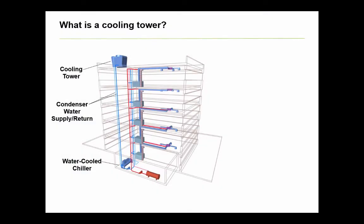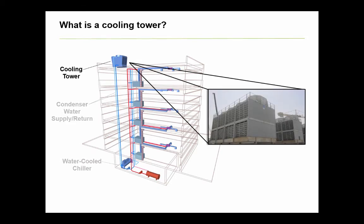So what is a cooling tower? Well, as you can see from the image, a cooling tower is used in water-cooled chiller plants, and its purpose is to reject facility heat to the atmosphere. The air handling unit and chiller tandem absorbs the building's heat and ultimately passes it to the cooling tower via the condenser water loop, which then transfers it to the ambient environment.